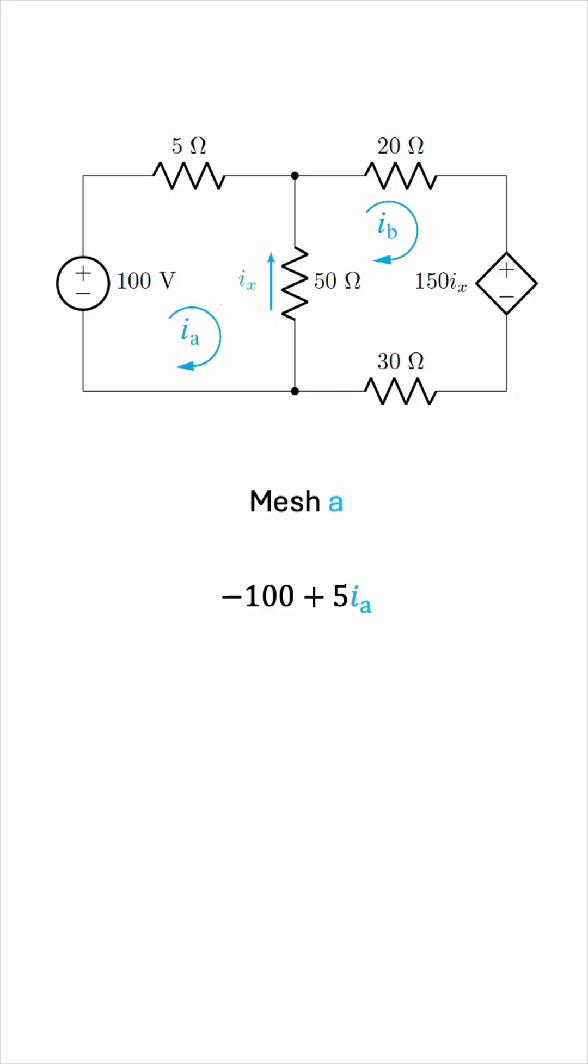And the difference always goes like this: your mesh minus other meshes. In this case, this will be 50 times Ia minus Ib. We're done, so this must be equal to 0.